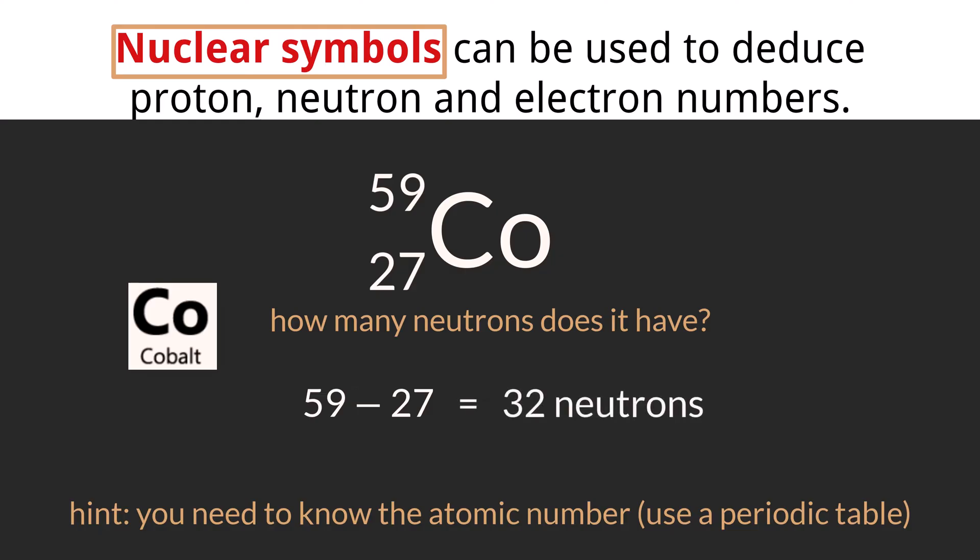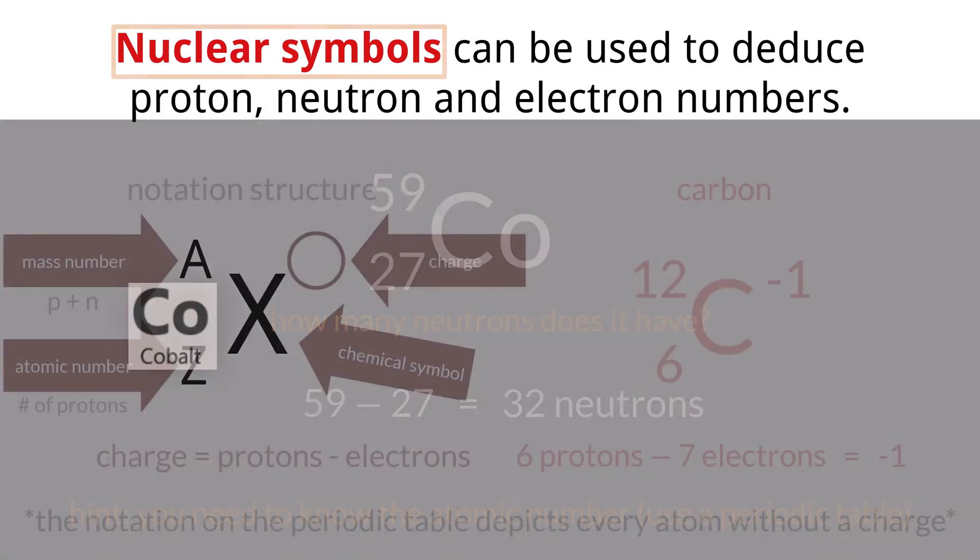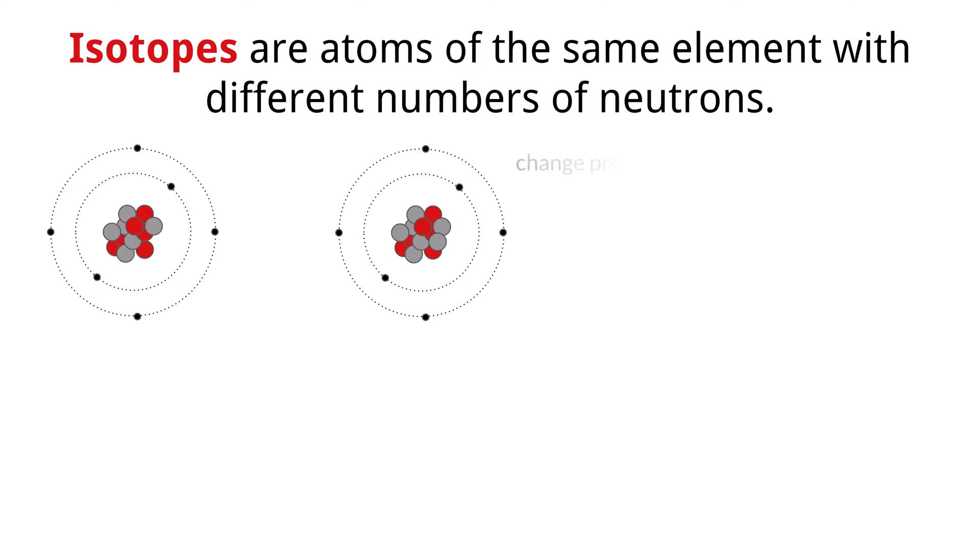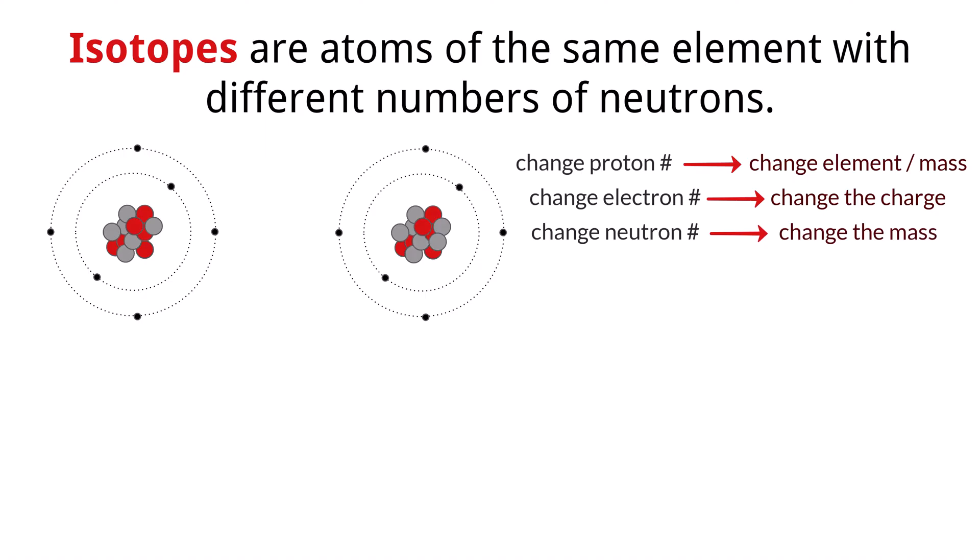So what we have learned so far about atoms: if you change the number of protons, you change the element and the mass. If you change the electron, you change the charge. And if you change the number of neutrons, you change only the mass. So atoms of specific elements can have different masses based on how many neutrons they have in the nucleus, which does not impact the element properties besides mass or the charge.